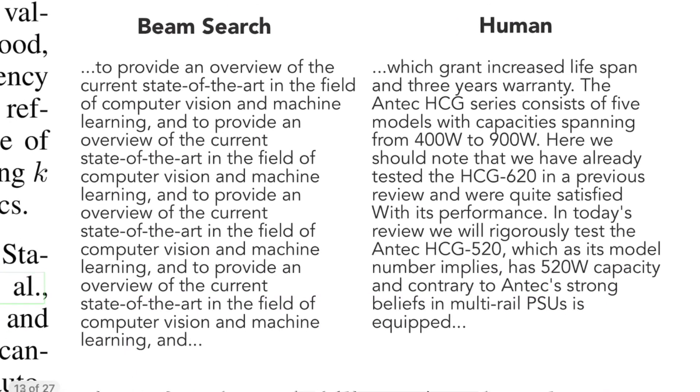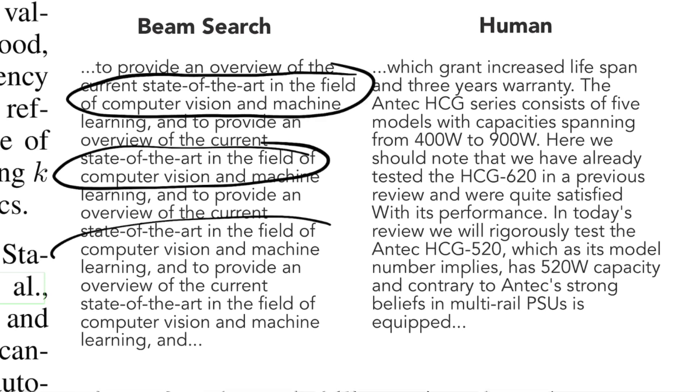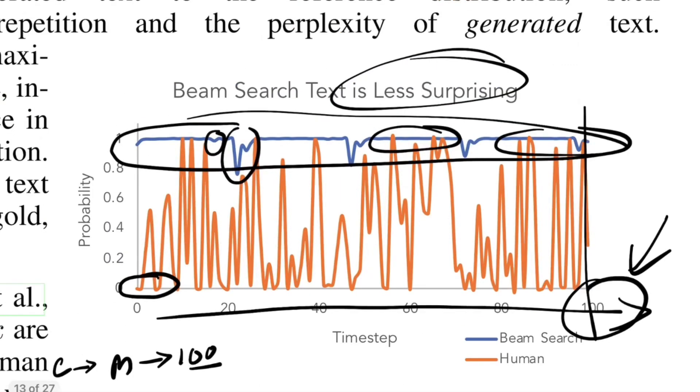In this example, like the state of the art in the field of computer vision and machine learning, this is getting repeated again and again, whereas that is not the case with humans. This repetitive nature is because beam search is mostly concentrated on higher probability words, so it gets trapped in a certain loop and won't explore diverse vocabulary words.